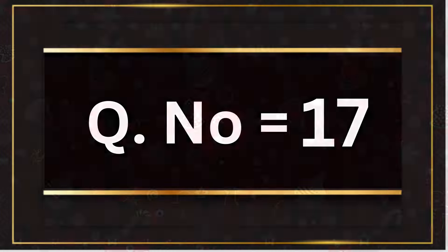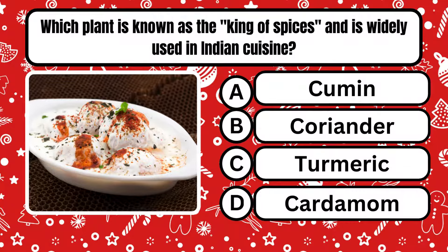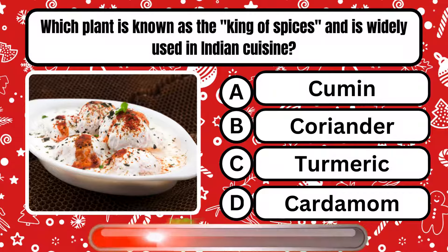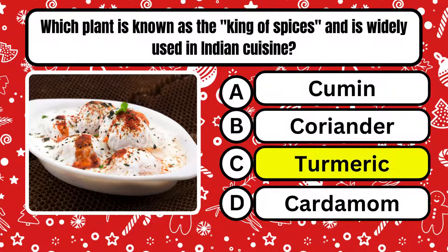Question number 17. Which plant is known as the king of spices and is widely used in Indian cuisine? Right answer is option C, turmeric.